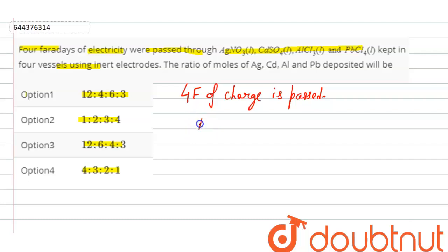So in case of silver, for 1 mole we require 1 Faraday charge. That means by 4 Faraday, 4 moles of silver will be deposited. Hence in case of silver, it will be 4 moles.